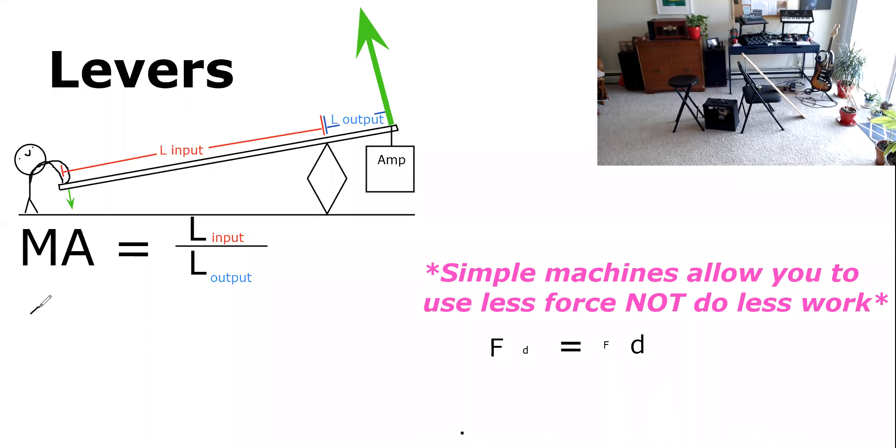So we said L input, remember that's the distance that I'm putting into it, that was 36 inches. The output length, or the length of the fulcrum to the load, was 10 inches. If we plug it into our mechanical advantage formula, what we'll get, mechanical advantage is equal to 36 inches divided by 10 inches.